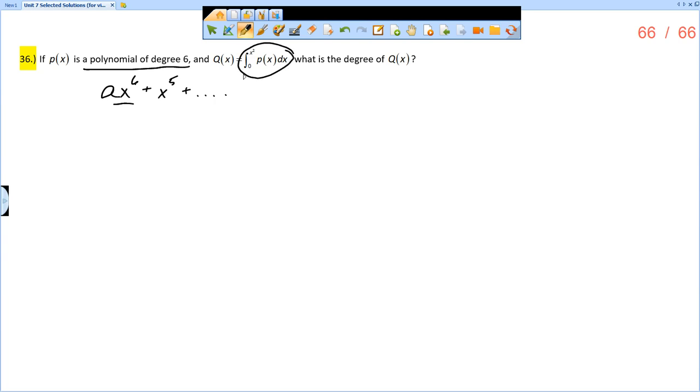Remember, the second fundamental theorem of calculus says F(x) equals the integral from A to G(x) of f(t)dt. So that tells us that F'(x) is f(G(x)) times G'(x).